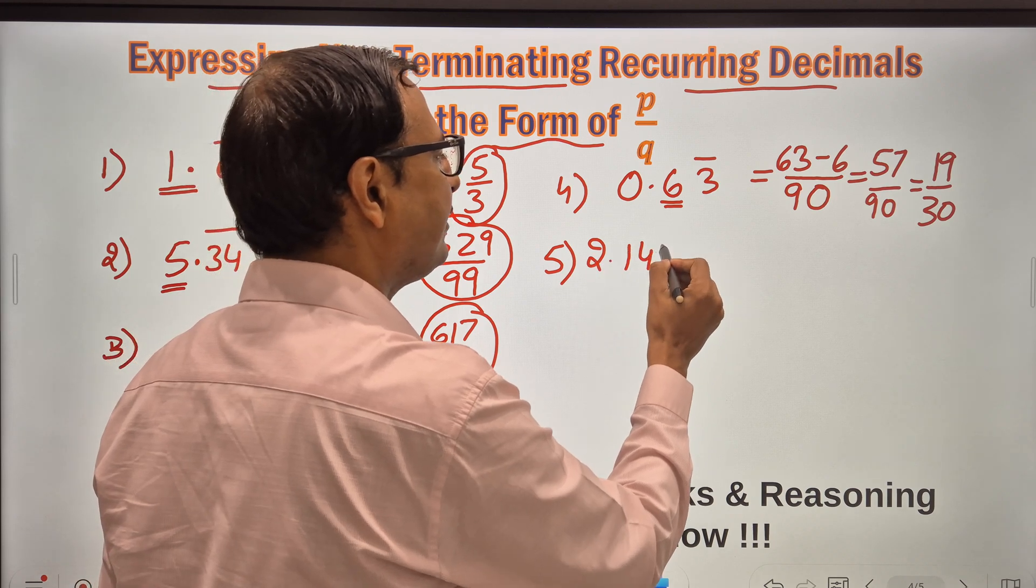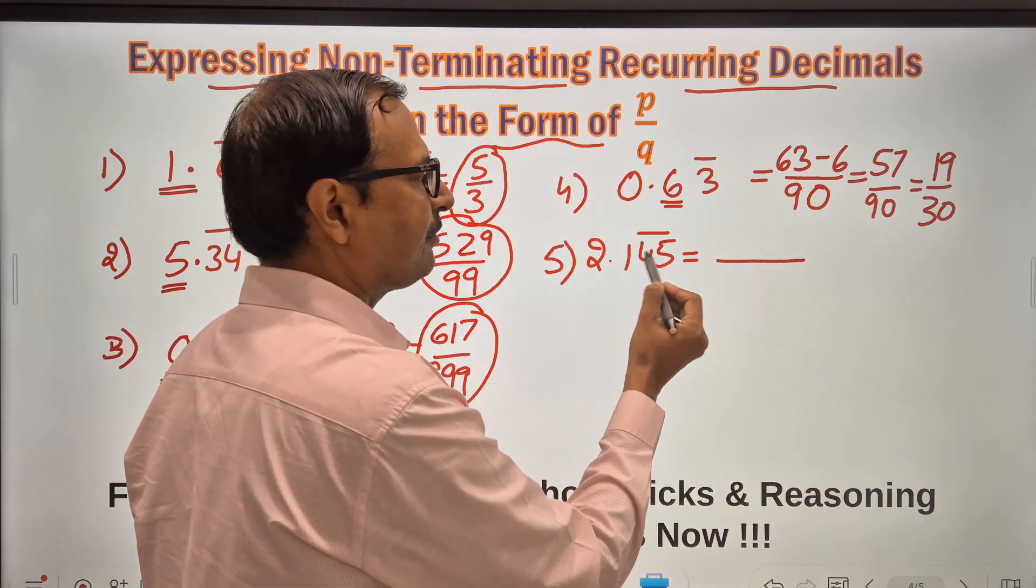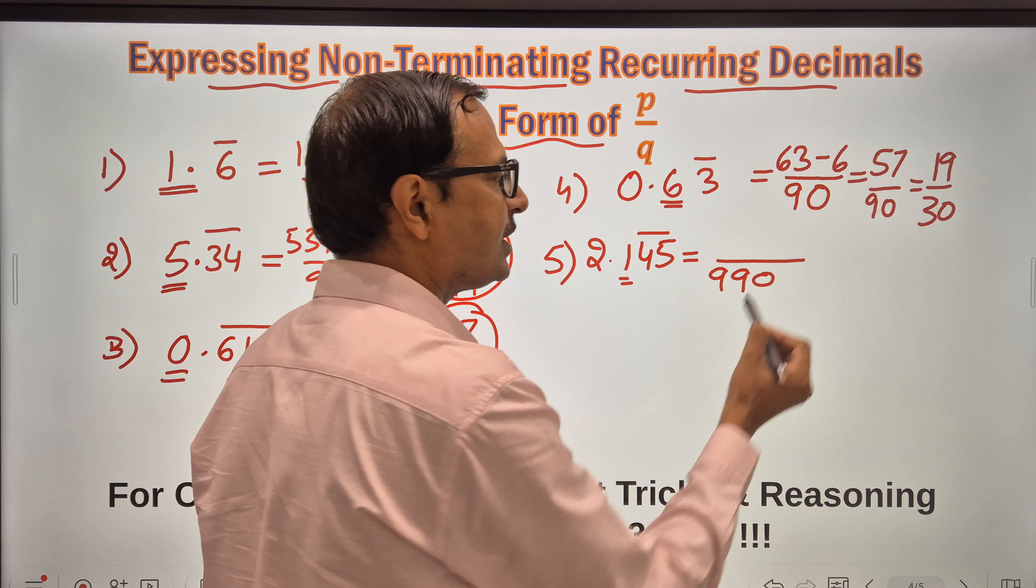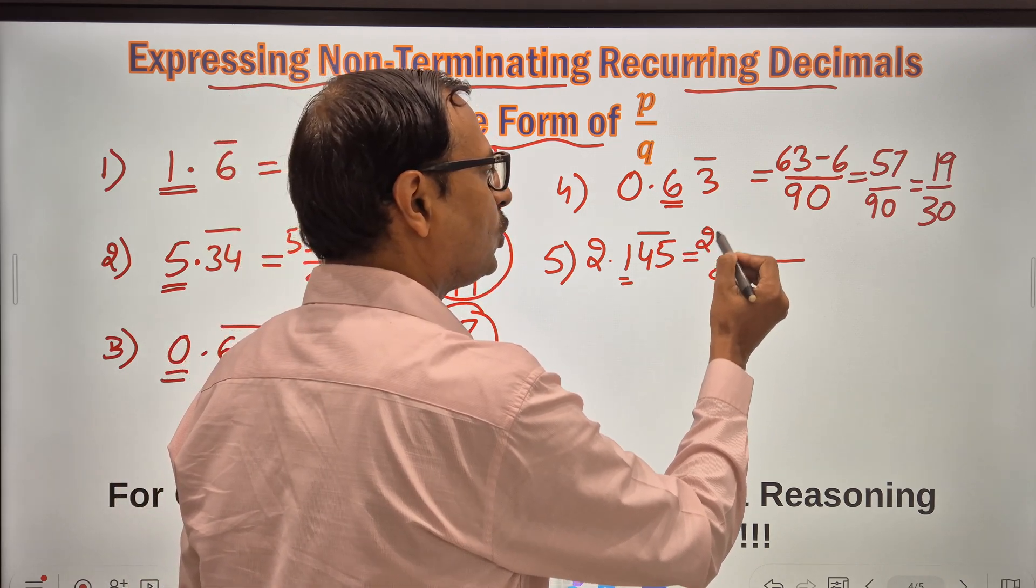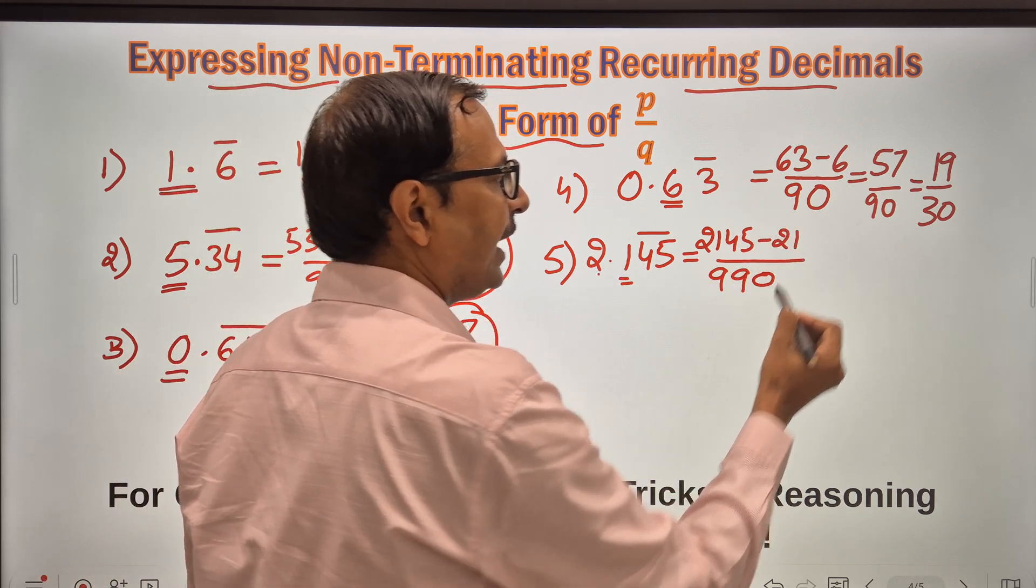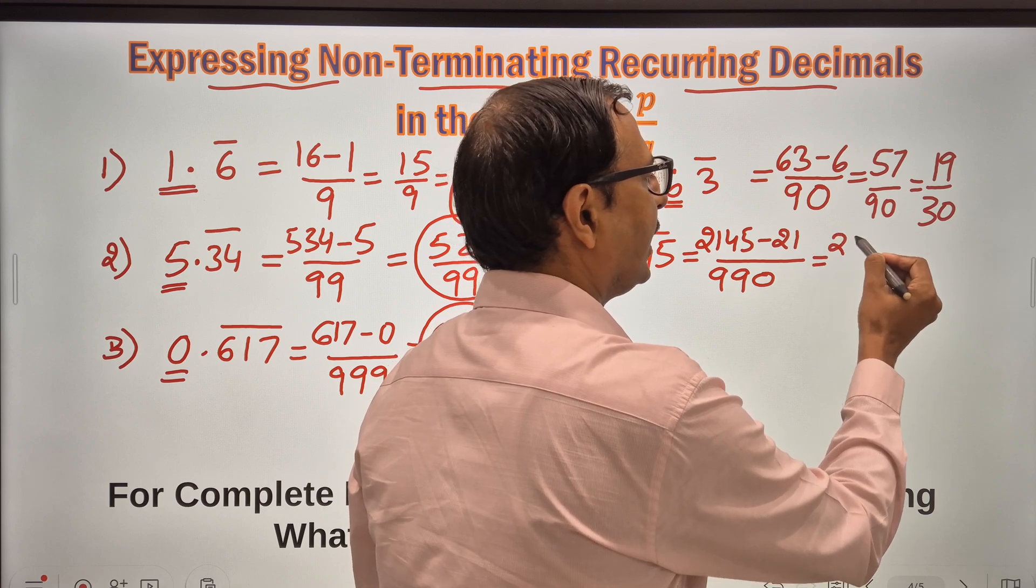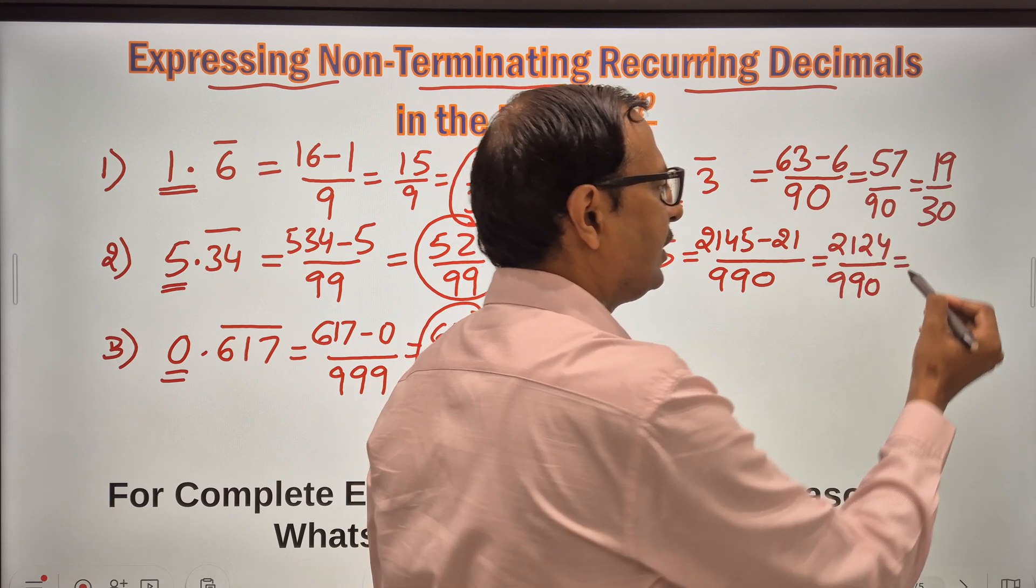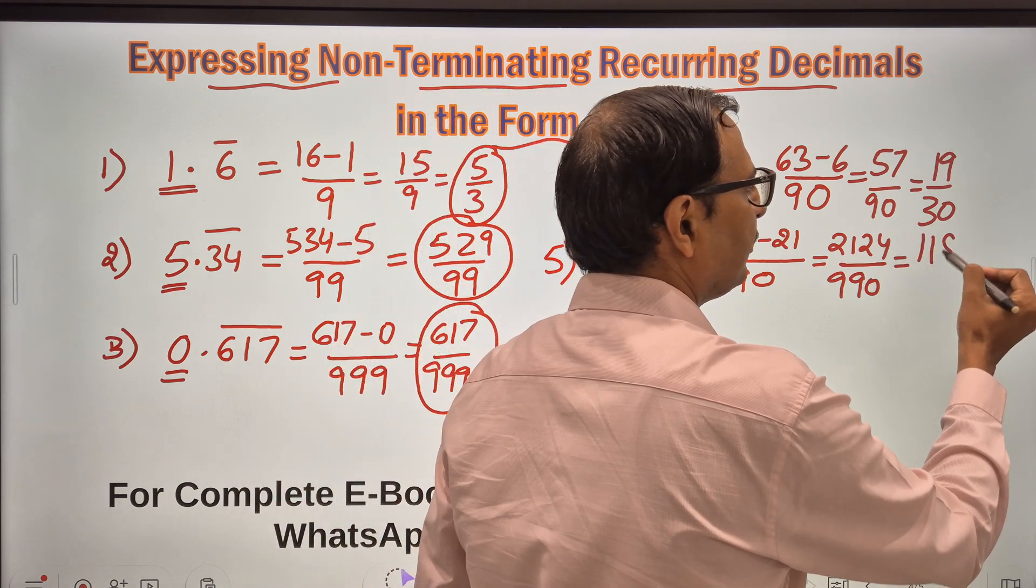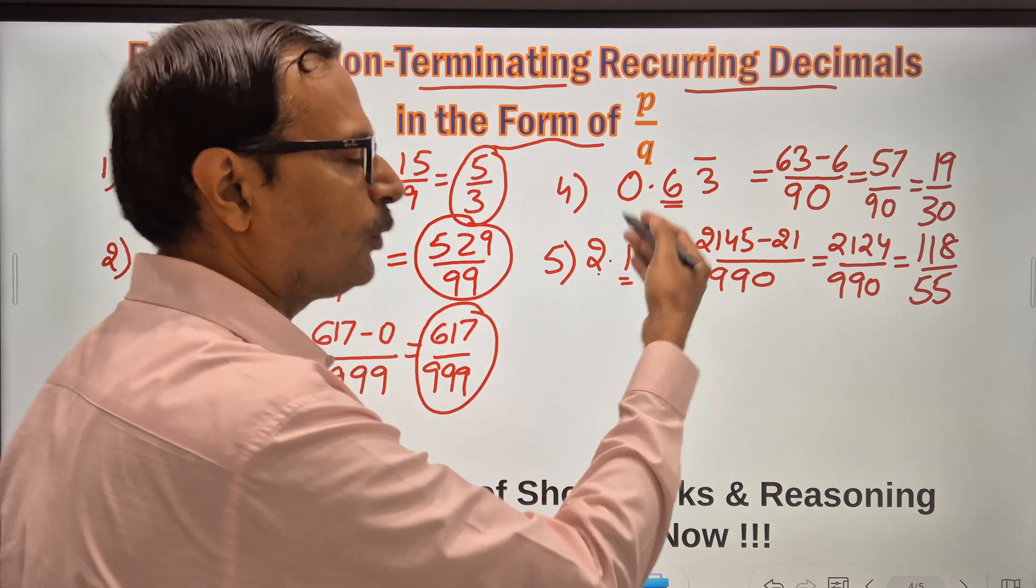Let's take another one: 2.1 bar 45, with a bar over 45. So what happens here is in the denominator you have two 9s because there are two digits which are repeating. And then there is one digit which is not repeating, so a 0. And then the entire number 2145 minus the digits which are not repeating, 2 and 1, so 21 here. And there we go. Rest everything is just calculations. So this is 2124 upon 990. And I reduced it to lowest form already for you just to save time. This is 118 upon 55. So you can check, 118 divided by 55 is 2.145454... And you are going to be surprised that the answer is exactly correct.